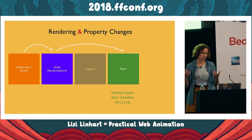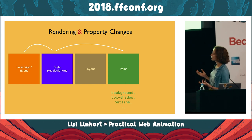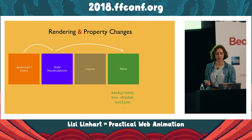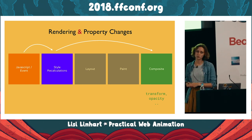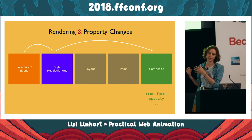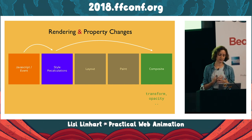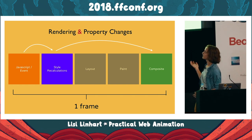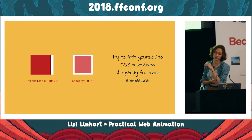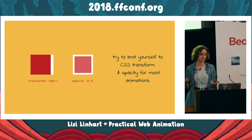If we want more performance, we'd animate paint properties like text color, background, box shadow, or outline — skipping the layout step, though it's still not the most performant. The most performant step is the composite step, where transform and opacity live. Animating at this last step means we skip layout and paint entirely, so the browser doesn't have to recalculate all elements and painting properties. Since all of this must happen in one frame, losing time on layout means dropping frames. The takeaway: use CSS transforms and opacity for most animations, but test other properties on weaker devices.